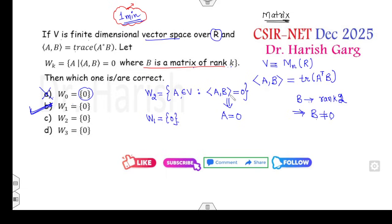Look at the third option, W_2. That is a matrix of rank 2. Again you can see if the matrix rank is 2, B is non-zero. If B is non-zero, that means A must be 0. Therefore W_2 is also {0}. Similarly W_3, if rank is 3, B is non-zero, therefore W_3 is also {0}. So which statements are correct? B, C, and D are the right answers.